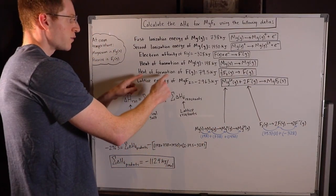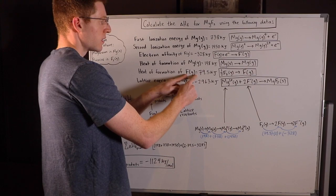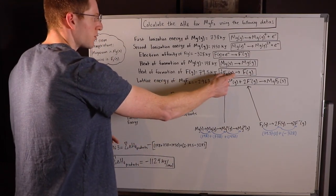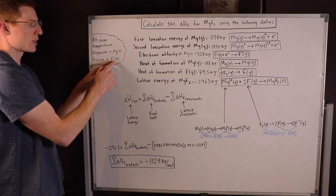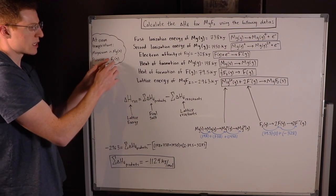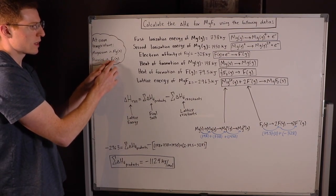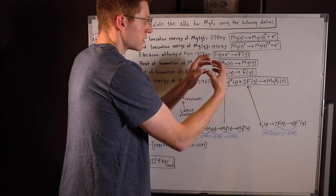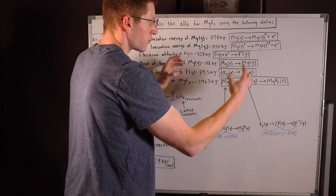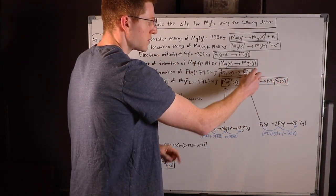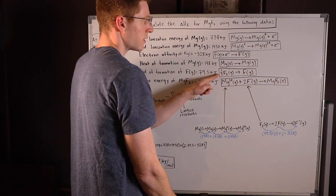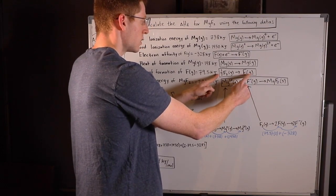The heat of formation of fluorine gas — what is the standard state for our reactant? Difluorine, F₂. It's a diatomic element at room temperature. So it's going to be split apart from F₂ to just one of the Fs. We put a one-half as a coefficient to balance the equation. And we have all the energies associated with these processes.